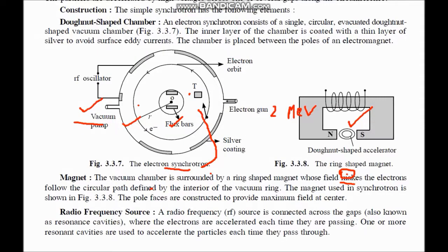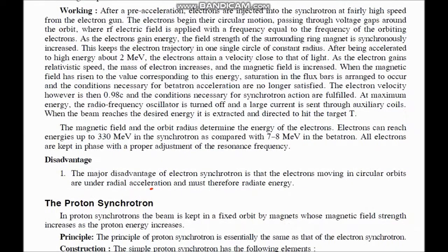These energies can be of the order of approximately 330 MeV as compared to 7 to 8 MeV in betatron. It can give very very high energies. But initially, we have to give energy up to 2 MeV by betatron action till it attains this speed, and then after that we use the other method to accelerate it.